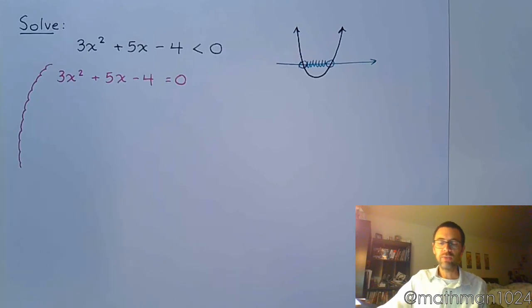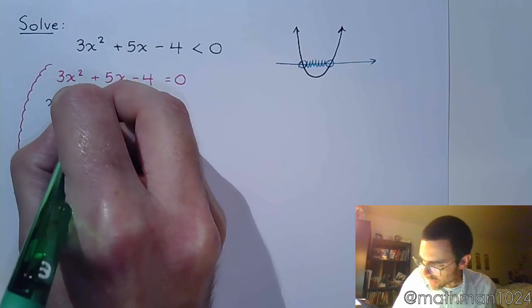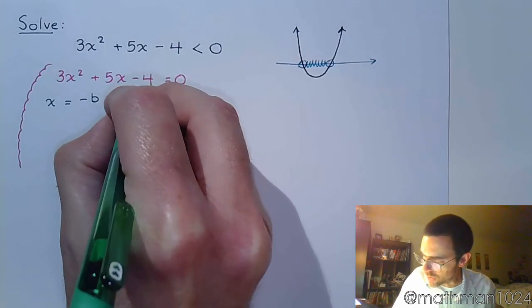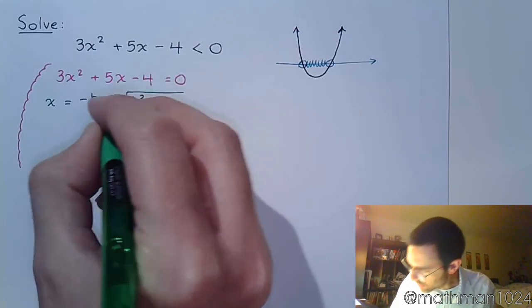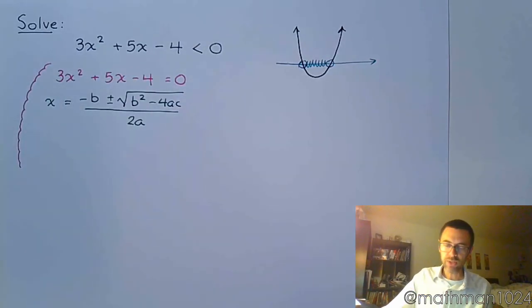So this is an example of using the quadratic formula. So remember the quadratic formula. X equals negative B plus or minus the square root of B squared minus 4AC all over 2A. Just like that.